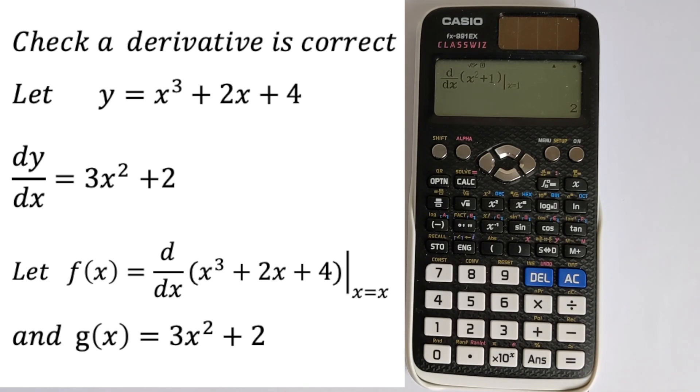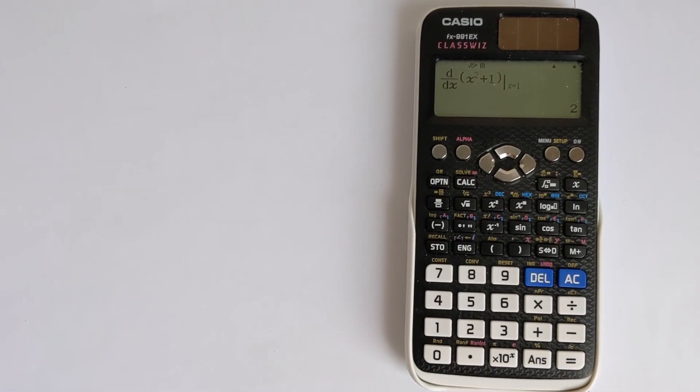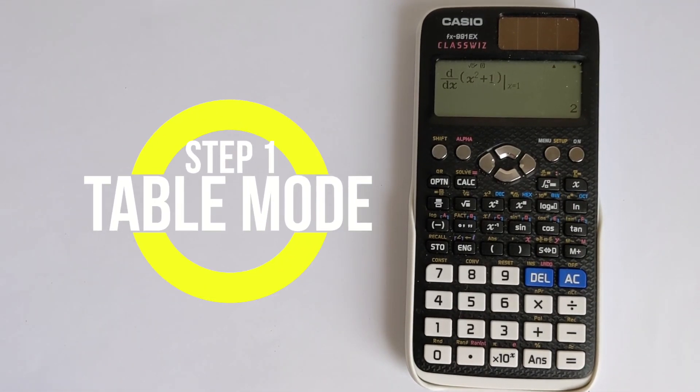So in this case, 3x squared plus 2. And we can input this into the calculator, and we need to go into table mode.